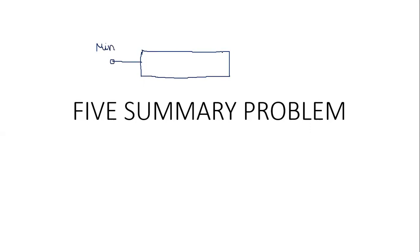In this video, we are going to look at the 5-number summary problem. When we discuss the box plot, we have 5 components: the minimum value, the maximum value, Q1, the median (Q2), and Q3. Q1 represents 25% of the values, Q2 represents 50%, and Q3 represents 75%. These are the various components of a box plot.